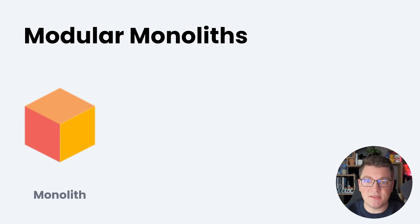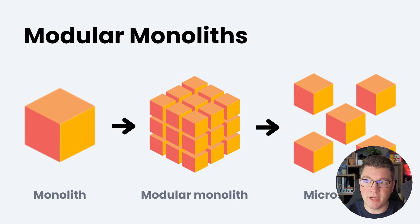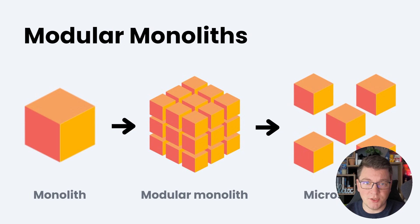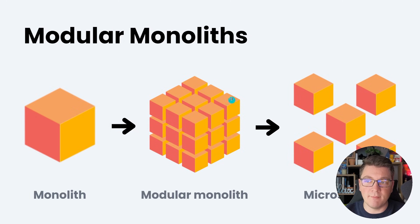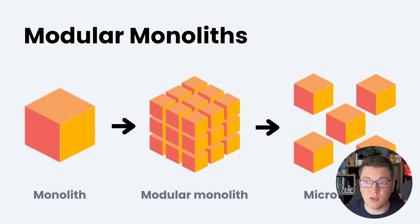Modular monoliths sit as the middle ground between monoliths and microservices. A monolith system represents a single executable application where all of the components inside contribute to the same functionality. All of the components are developed and deployed together inside of a monolith, and this kind of system tends to grow in complexity over time as the number of features in your application increases. A modular monolith is still a single executable application, however it consists of logically separated components that are still deployed together but are otherwise independent.